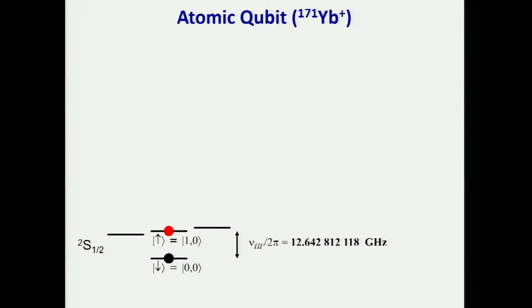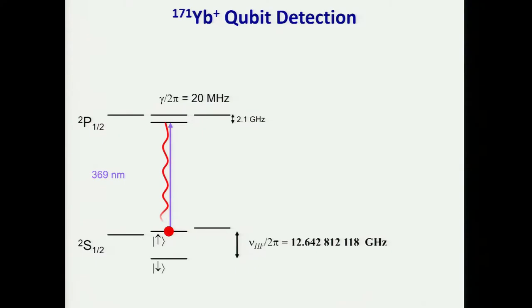We can detect this qubit by shining laser light on an appropriate transition that it scatters lots of photons. It's a cycling transition. The important point is, in one state, it glows. In the other state, it's dark. Because in the other state, that same laser is now 12 gigahertz away from an excited state that only has 20 megahertz of line width. So it's pretty much dark. And so in a single shot, bright or dark, we get a binary measurement.